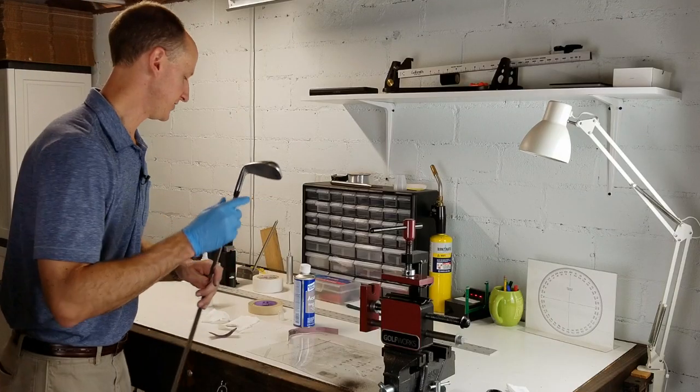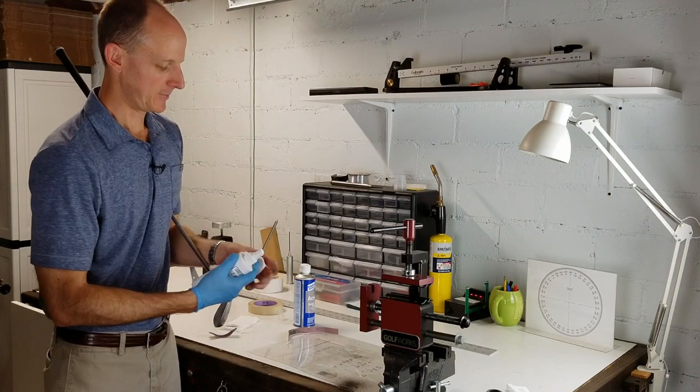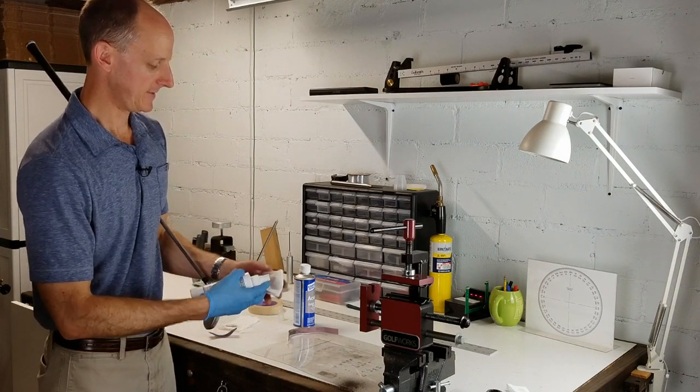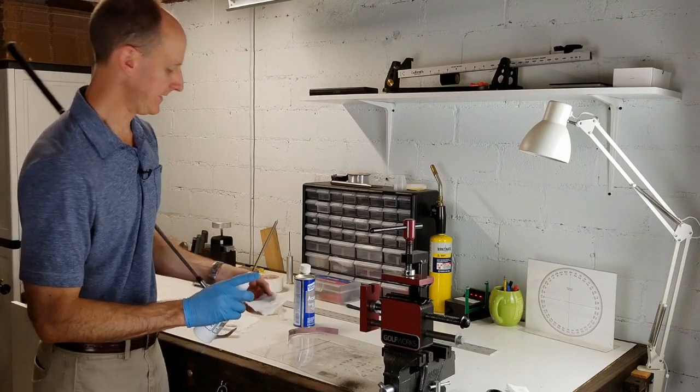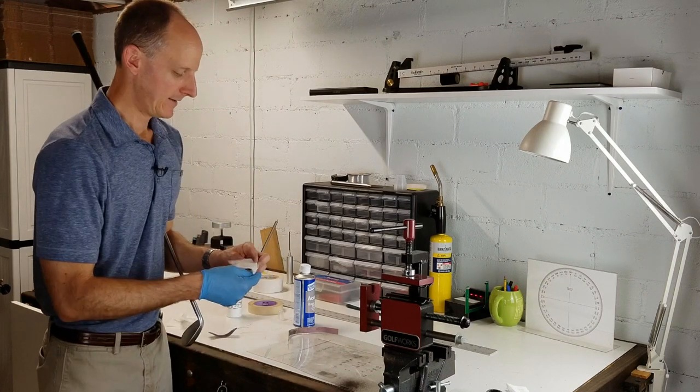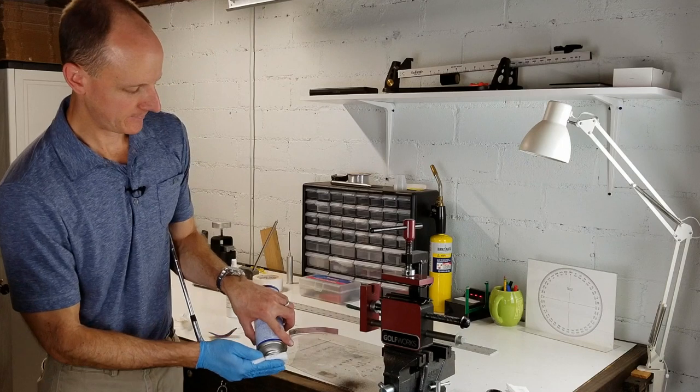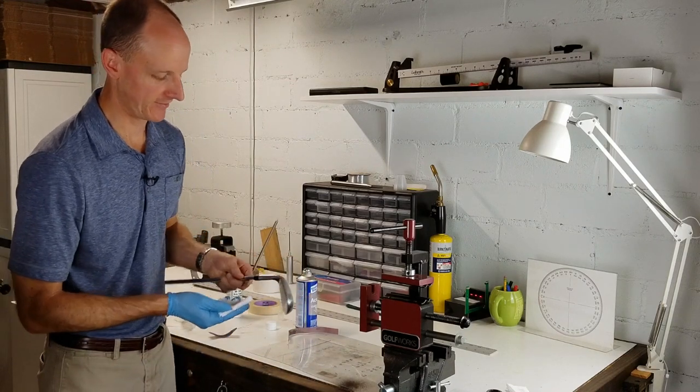So now we just need to shine it up again. We'll go spray a little bit of grip solvent on a piece of paper towel to help us get that shine back at the end. Set that aside for a minute. Get our acetone on the towel. Separate towel, different towel, not the same one you put the grip solvent on.